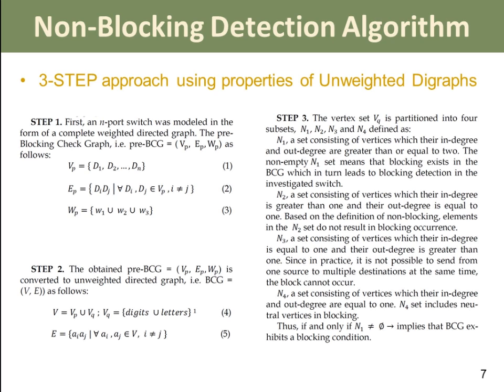Another contribution of this work is generalizing a novel graph-theoretic method for detection of blocking conditions in photonic switches. This methodology is applicable to all compared photonic switches to support its generalization. As you can see, it has three steps discussed in detail in the paper. First, we convert the switch into a complete directed graph, and then this obtained graph is converted into an unweighted directed graph based on equations 4 and 5. Finally, step 3 is applied, which determines whether the examined switch has blocking conditions or not.